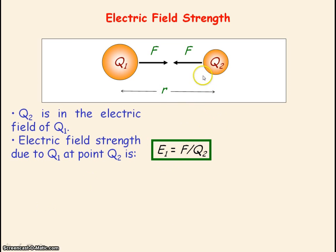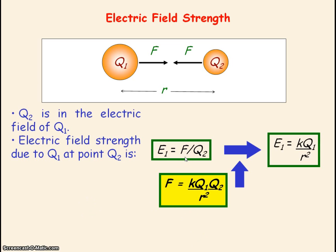The force acting on Q2 is found from Coulomb's law. If we substitute force F into our equation for electric field strength, we get that the electric field strength due to Q1 equals kQ1 divided by r squared.